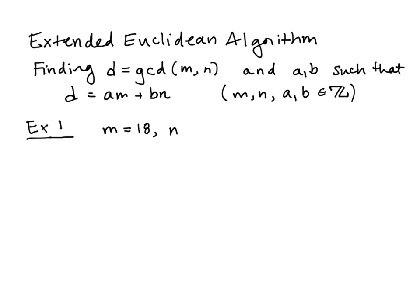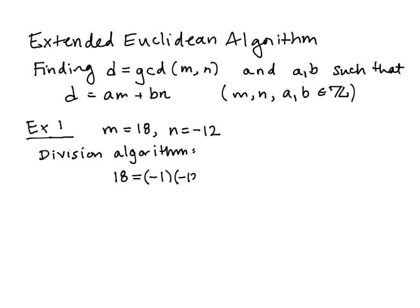In our first example we'll look at two integers. I'm pretty sure you could figure out what the GCD is and even how to write it as a linear combination, but let me do a quick example using the Euclidean algorithm. We use the division algorithm to write 18 as a multiple of 12 plus some remainder. Our first equation gives us 18 is negative 1 times negative 12 with a remainder of 6. Remember, the division algorithm says there exist integers q and r where m is qn plus r, and r is between zero and strictly less than the absolute value of the divisor.